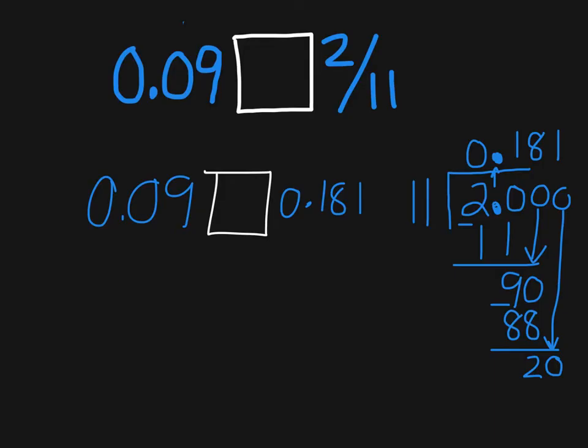Now let's look to see what is the greater number based on place value. We have a 0 in the 1's place, a 0 in the 1's place. That doesn't help us, so let's go to the 10th place. A 0 in the 10th place here, but a 1 in the 10th place here. And since 1 is greater than 0, this tells us that our value of 181 thousandths, or 2 elevenths, is going to be the greater number. So we're going to set up our equality sign as 2 elevenths is greater than 9 hundredths.